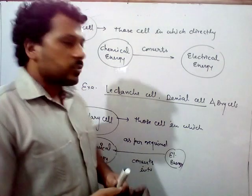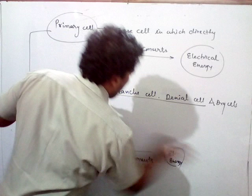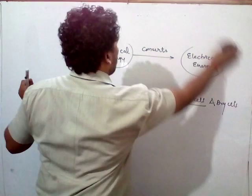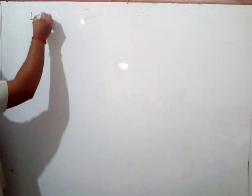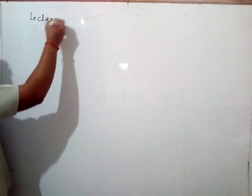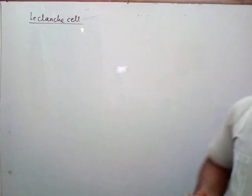Accumulator cells are the secondary cells. Now we will discuss about the Leclanche cell. So, what is the Leclanche cell?